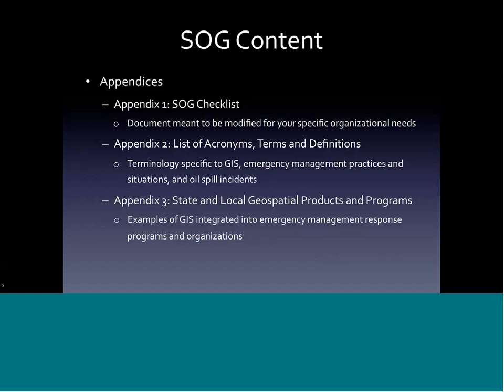The document includes three appendixes. The first is the SOG checklist we've spoken about — modify it to fit your needs and let us know if there are big holes we've missed. Appendix 2 is a list of acronyms, terms, and definitions to help GIS professionals understand emergency management terms and vice versa — please add to it and donate that information back. The final appendix is an example of products and programs where GIS has been integrated into emergency response — a great resource if you're getting started with incorporating GIS into your emergency response plan for coastal oil spills.